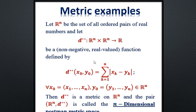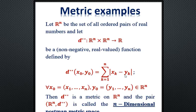Another useful metric is the postman metric, defined as d**(x₀, y₀) = Σᵢ|xᵢ − yᵢ| — that is, instead of taking the maximum, we sum up all the absolute differences. When we combine this metric with ℝⁿ, we get the n-dimensional postman metric space.